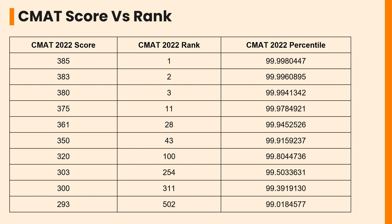Let's check the CMAT scores in 2022. For Rank 1, the candidate got a score of 385 with a percentile of 99.9980447. For Rank 2, the candidate got a score of 383 with a percentile of 99.9960895.